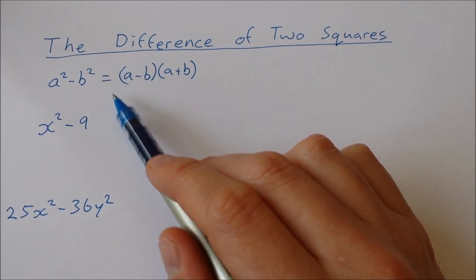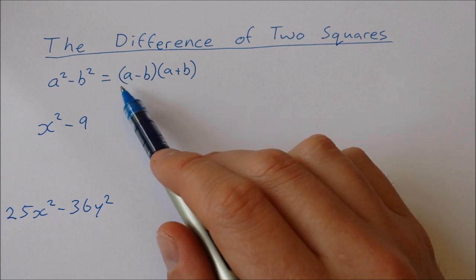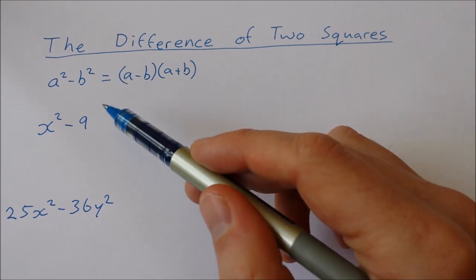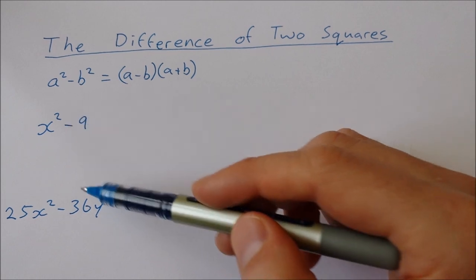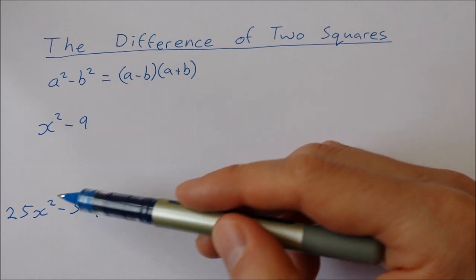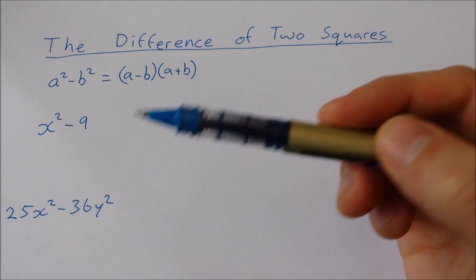I'll show you where this expression comes from at the end of the video, but first I'm going to show you two examples. First example is x squared minus 9, and the second example is a little bit harder, where we have 25x squared minus 36y squared.